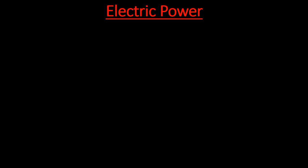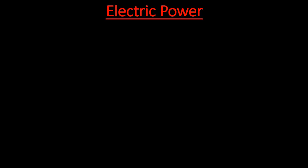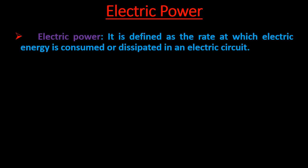The more the number of electrical devices used, the more electrical energy is consumed. Also, the longer a device is used, the more energy is consumed. If we divide the electric energy consumed by time, it gives electric power. Electric power is defined as the rate at which electric energy is consumed or dissipated in an electric circuit.